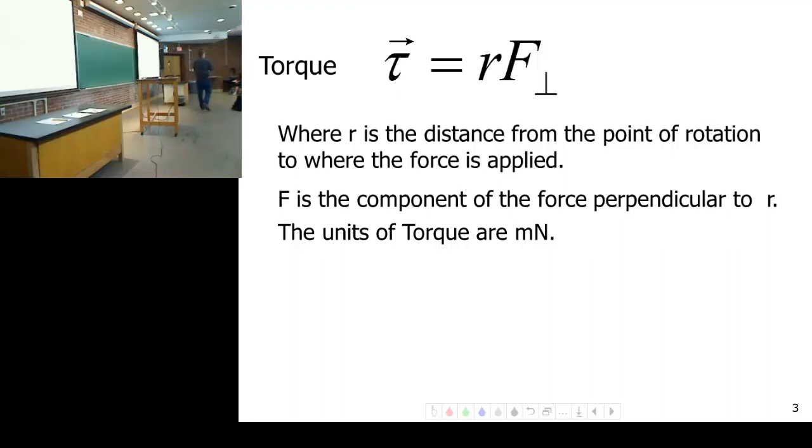Now, there may be more than one point of rotation, but it's not anywhere. It's wherever the thing can rotate about. Therefore, we use a different symbol. Even though they're both distances, they're not from the same spot. And then we use F perpendicular, which means we need to find the component of force that is perpendicular to R.